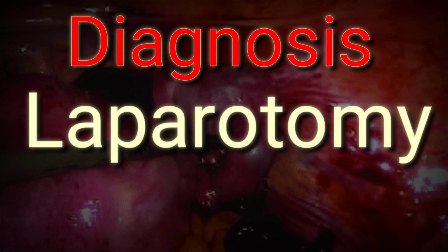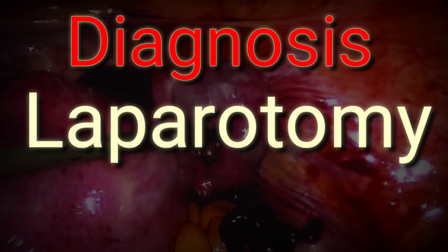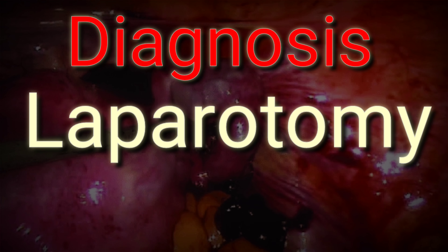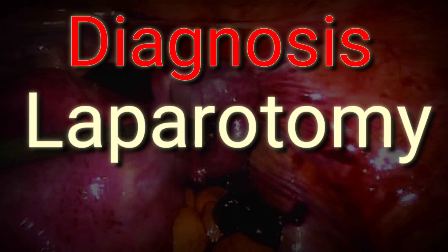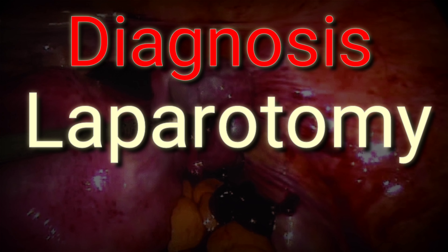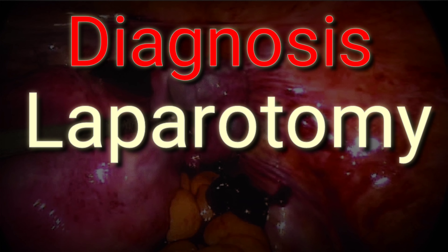How is uterine rupture diagnosed? Uterine rupture happens suddenly and can be difficult to diagnose because the symptoms are often nonspecific. Laparotomy is the procedure used for diagnosis.